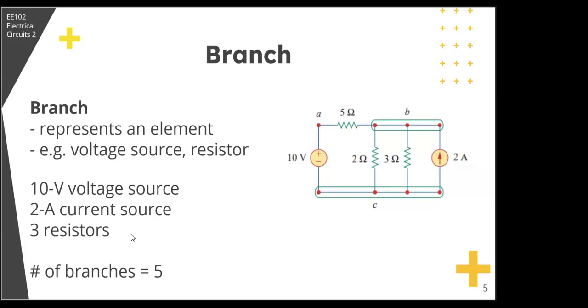A branch represents a single element such as a voltage source or a resistor. In other words, a branch represents any two terminal element. In this given circuit, there are five branches because there are five elements. We have the voltage source, the current source, and three resistors. So we have five branches.